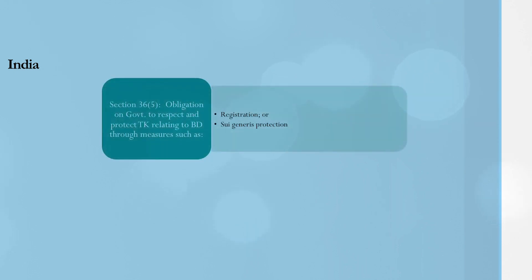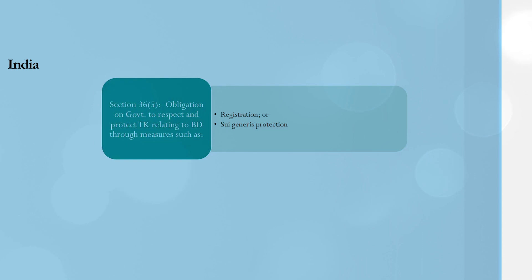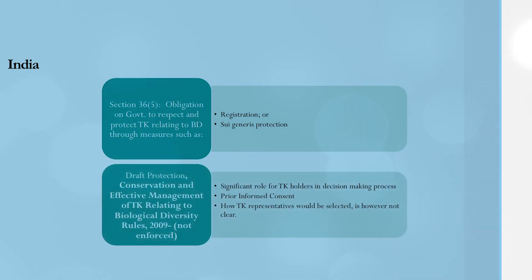Under Section 65, the government has been obligated to protect TK relating to biodiversity through measures such as registration or sui generis protection. However, India has not yet implemented these obligations in relation to a positive form of protection for TK. Draft Protection, Conservation and Effective Management of TK Rules have been there since the 2009 draft, but they are not enforced as yet. There is a significant role for TK holders in the decision-making process in this draft, though prior informed consent and how TK representatives would be selected is not clear.